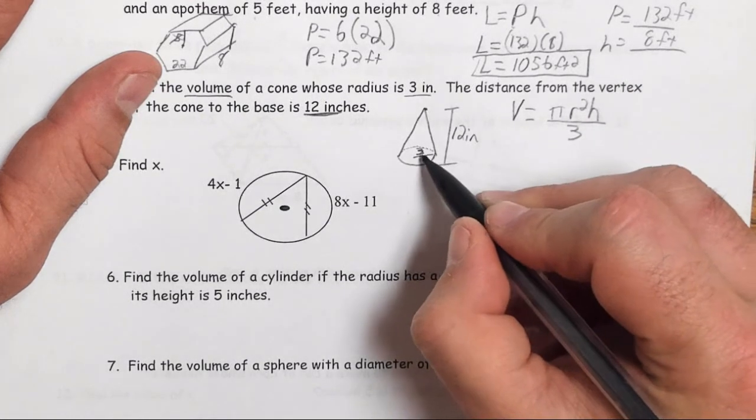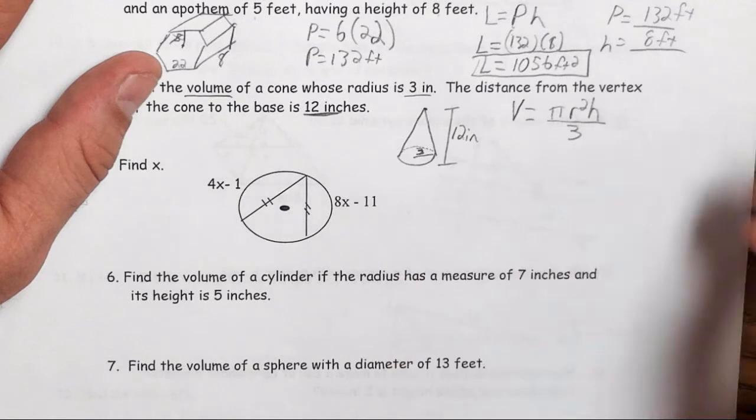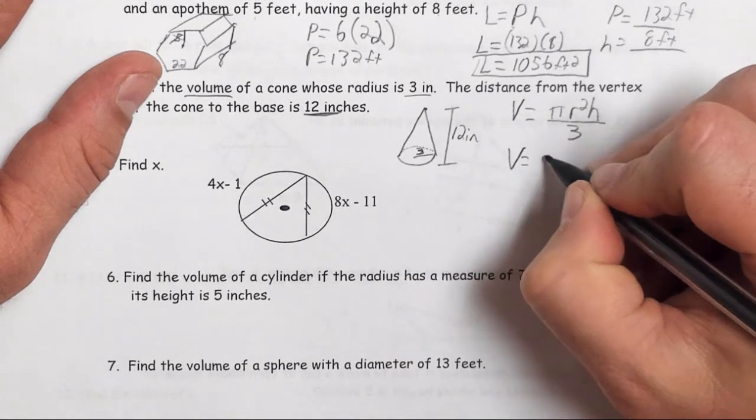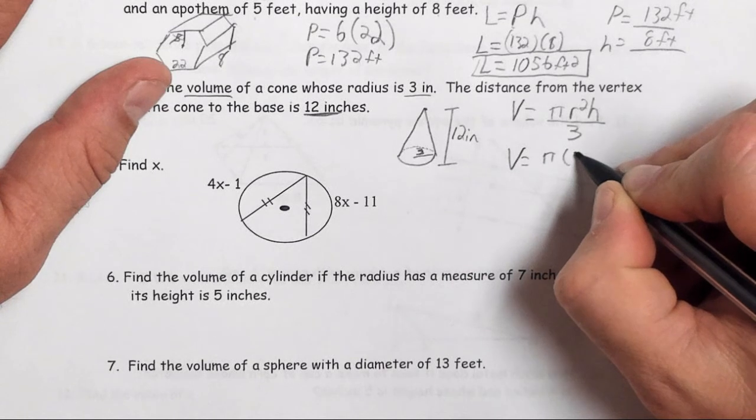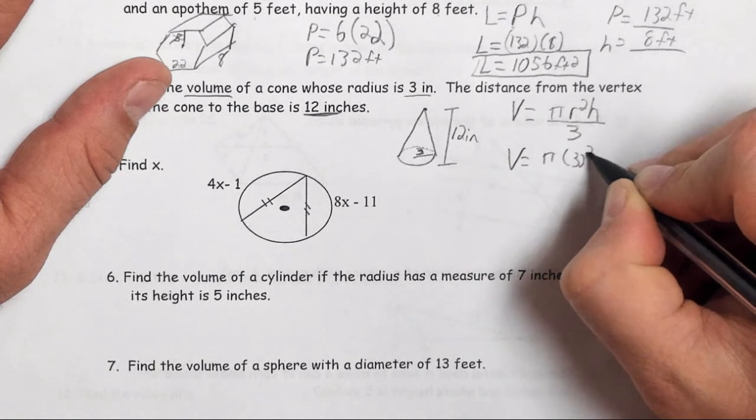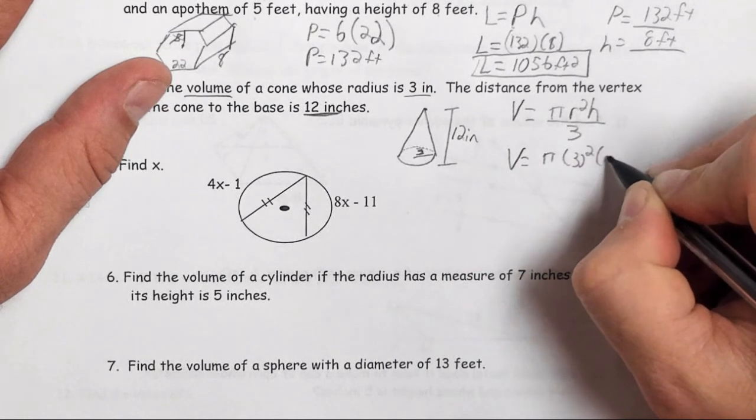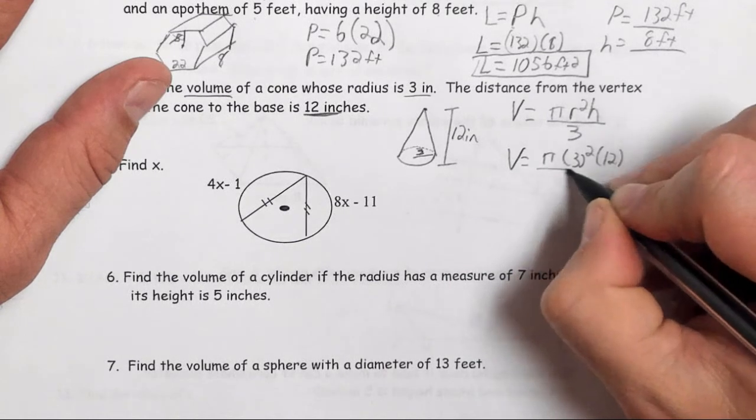Those two are the ones that are given to me, r and h. We're just going to plug in pi times 3 squared times the height is 12, all divided by 3.